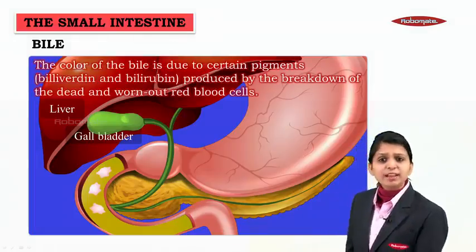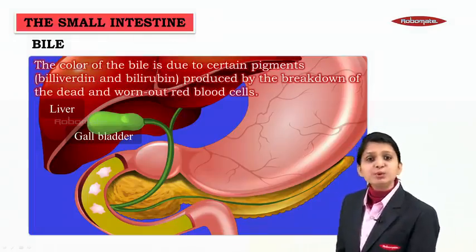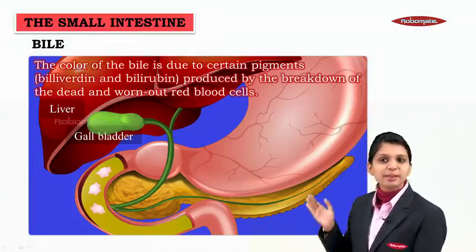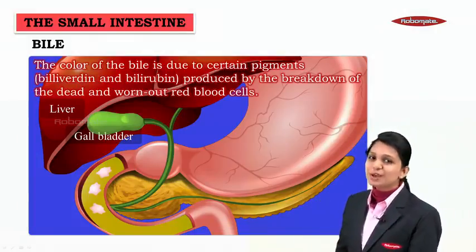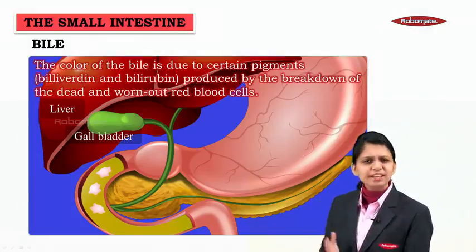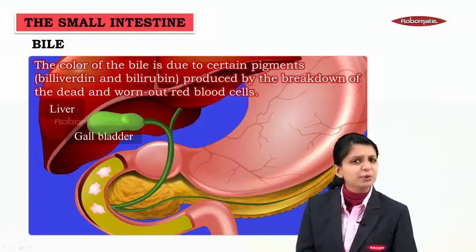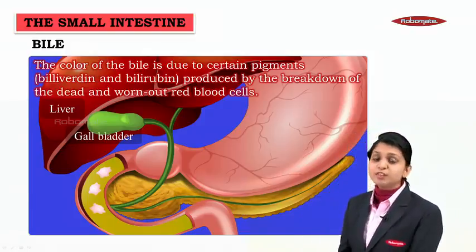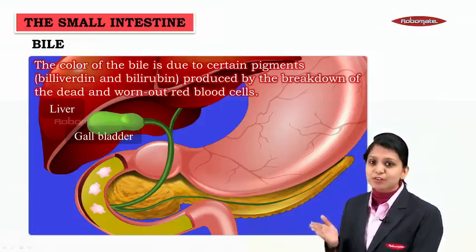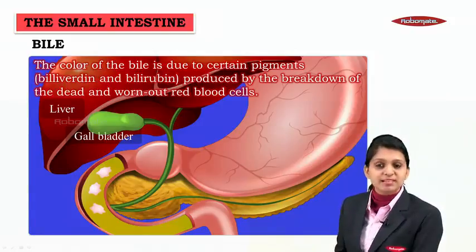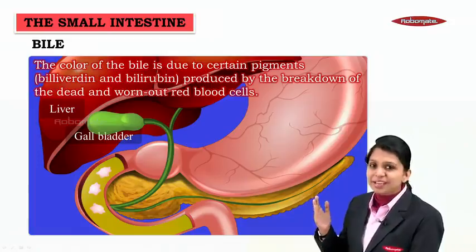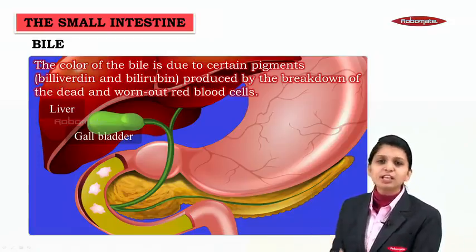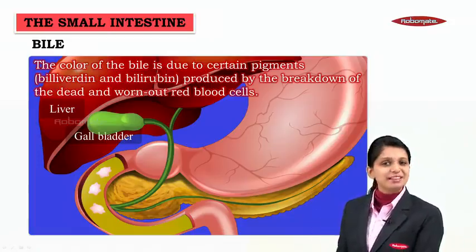The color of the bile juice is due to certain pigments called biliverdine and bilirubin, produced by the breakdown of the dead and worn-out red blood cells. Because of this breakdown, biliverdine and bilirubin give a particular color to the bile juice.